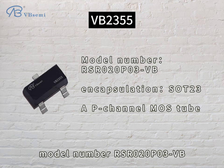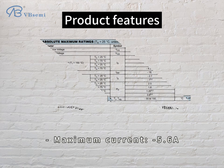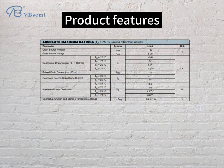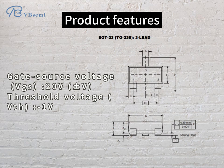Model number RS2020-P03VB. Product features: Rated Voltage -30V, Maximum Current 5.6A, Gate-Source Voltage VGS 20V, Threshold Voltage VTH -1V.